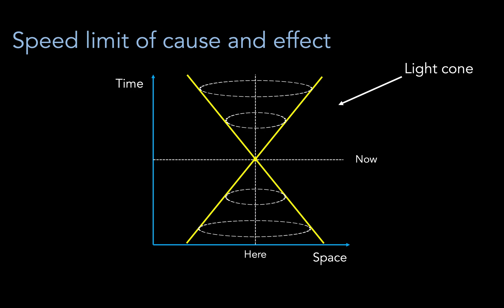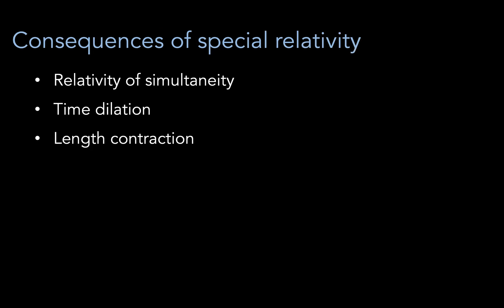These are called light cones and they basically determine what can and cannot affect and be affected by our event. In some sense, our event can communicate only with other events inside the light cones, but it could not communicate with events outside the light cones. This is because the speed of light is the speed limit of cause and effect.